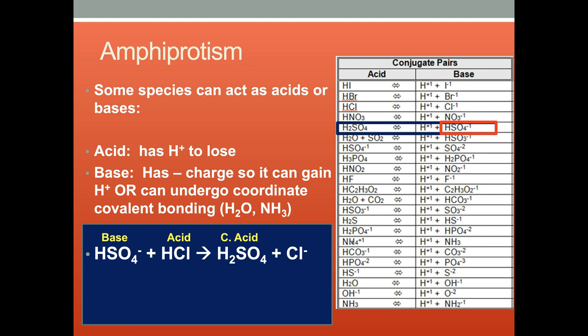When HSO4- gains a hydrogen, it becomes its conjugate acid, H2SO4. When HCl loses its H, it forms the conjugate base, Cl-.